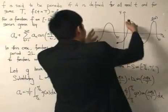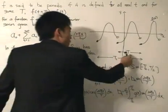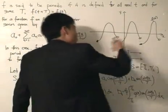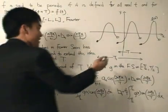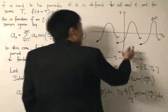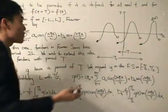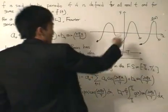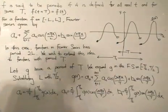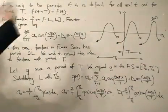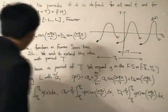When we define the smallest period, in this case capital T, we call it the fundamental period, because it's the smallest one and that's normally the more important one. So that's what a periodic function is.